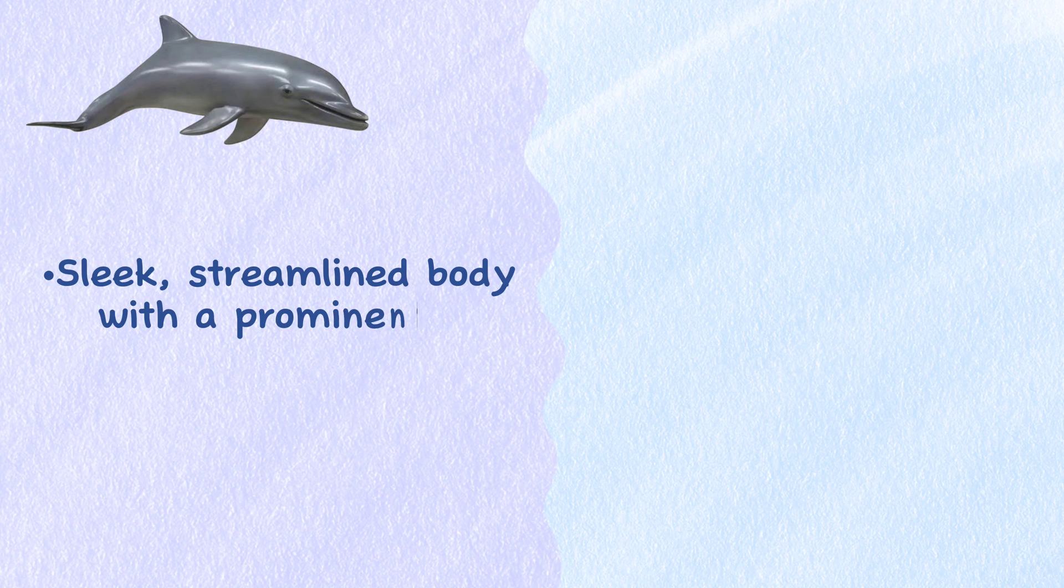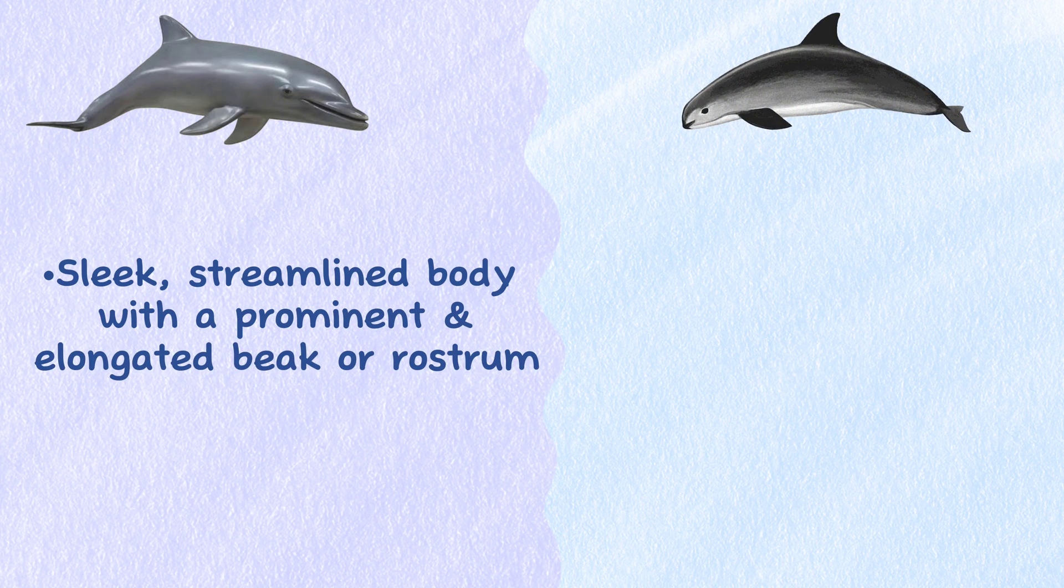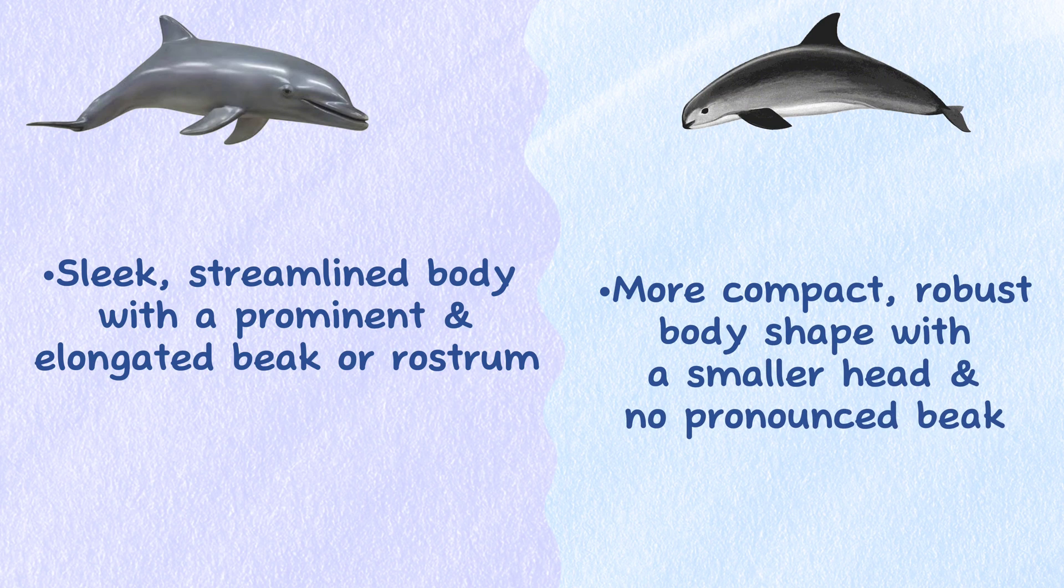Shape. Dolphins have a sleek, streamlined body with a prominent and elongated beak or rostrum. Porpoises, on the other hand, have a more compact, robust body shape with a smaller head and no pronounced beak.